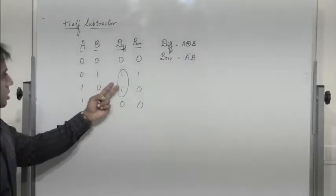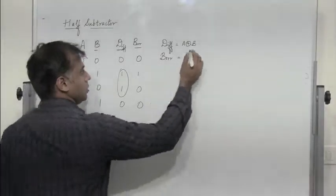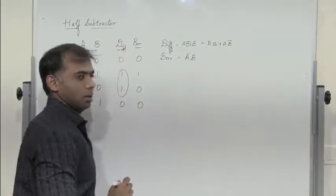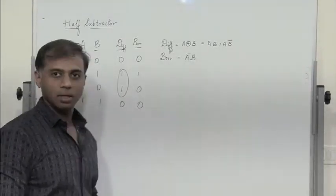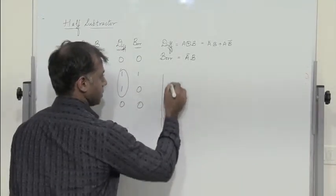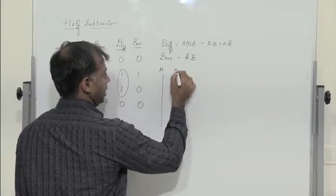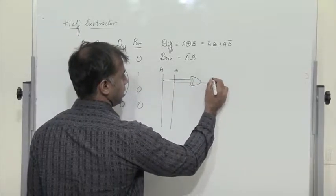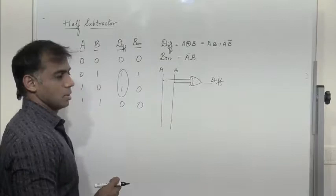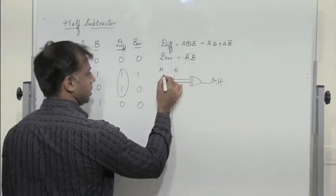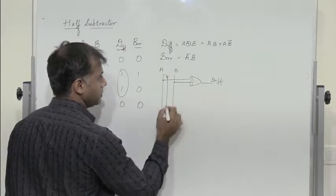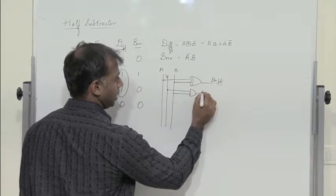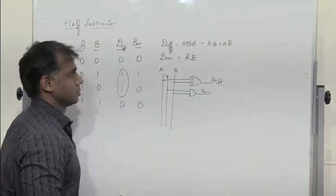For complementary inputs the output is complemented, so XOR is A̅B + AB̅. We can implement this using gates. We have A and B: A XOR B gives the difference. Next, we pass A through an inverter to get A̅, then pass A̅ and B through an AND gate to get the borrow.